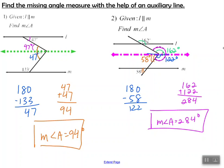In problem two, hopefully you started off by drawing yourself an auxiliary line. Then you should have recognized that in the top portion with line L, the 162 degrees angle corresponds with the upper portion of angle A. Since they are corresponding angles, they're congruent, so this top portion of angle A measures 162 degrees.